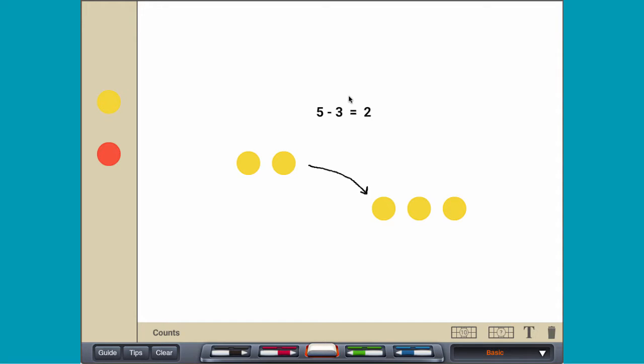The subtraction 5 minus 3 can also be modeled by placing five yellow counters, flipping three of them to red, and counting how many yellow counters remain.